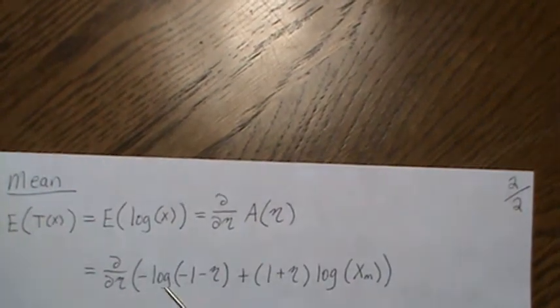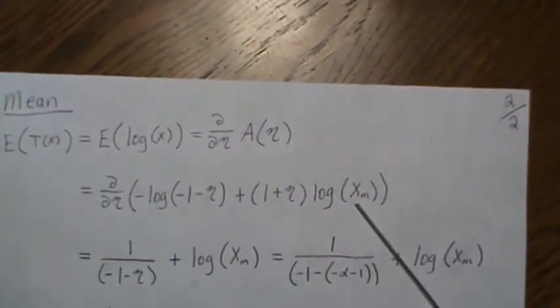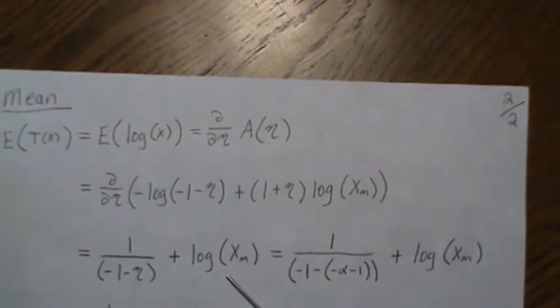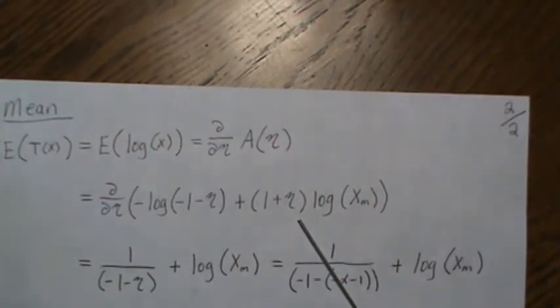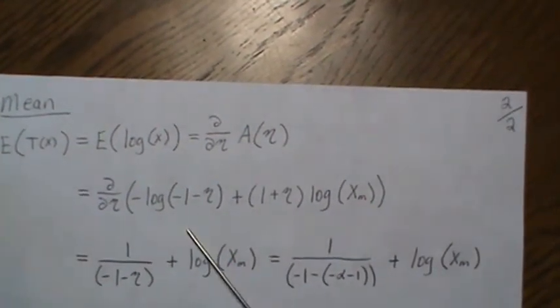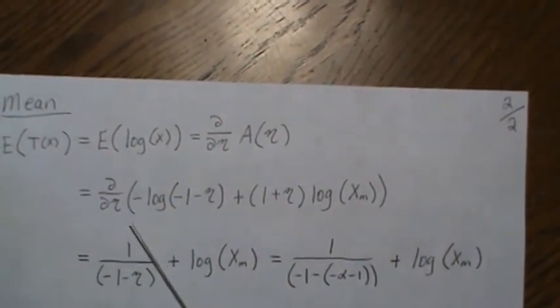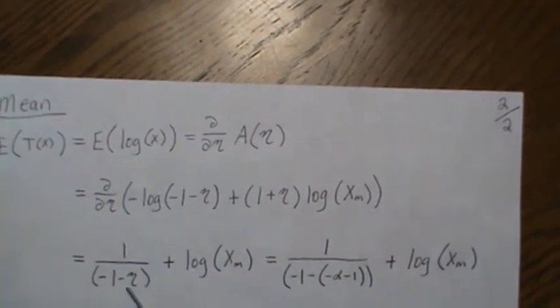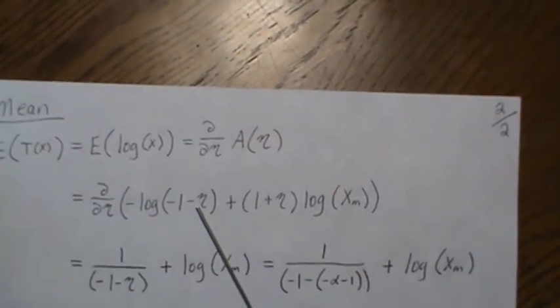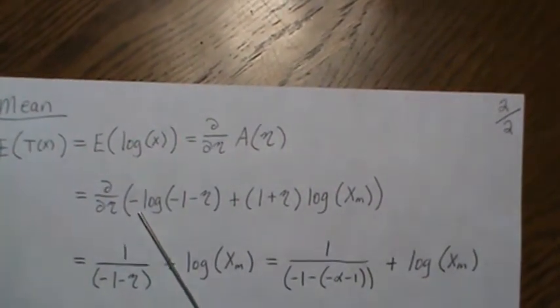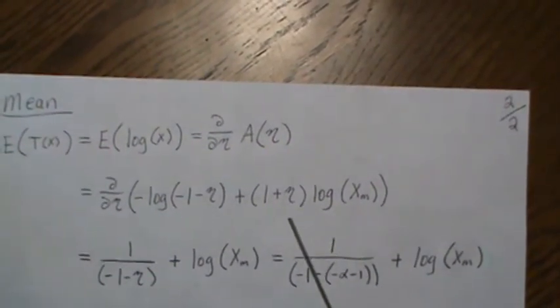Our log partition was this long function and now we just start taking derivatives. We have 2 over, the minus is a constant so it's one over this, times the derivative of this inside with respect to eta which is minus 1, so that minus 1 and minus 1 cancel. Here there's, you know, if we take this times each of those, this is a constant when it's multiplied by 1 but with respect to eta we get the log of X of M back.